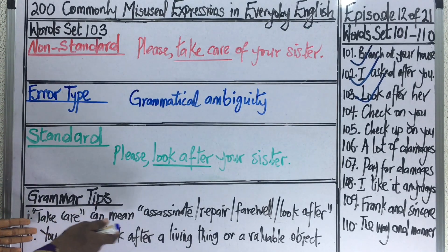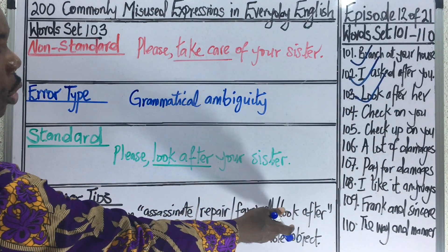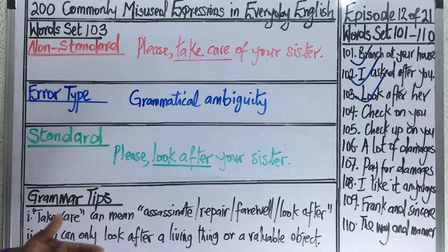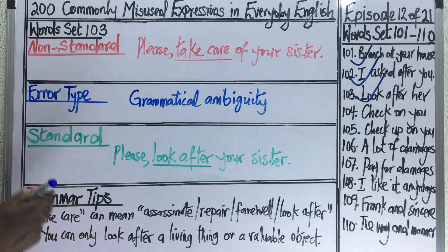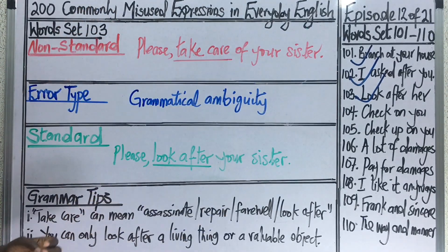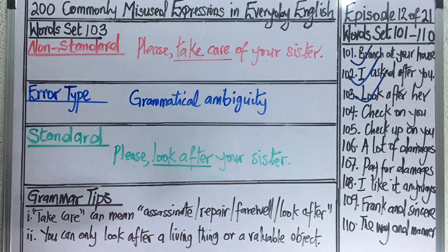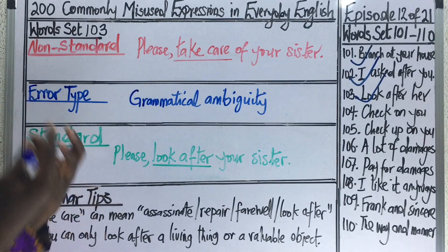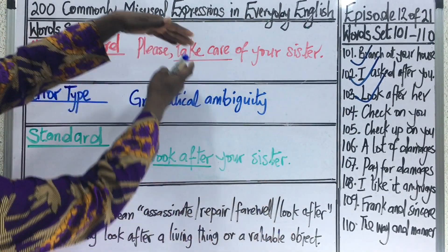The expression 'take care' can mean to assassinate, to repair, to beat someone, or to look after someone or something valuable. You can only look after a living thing or a valuable object. When you tell someone 'take care of your sister,' we are not sure what you mean — are you asking them to assassinate her, beat her, or look after her? So the better choice is 'look after.'